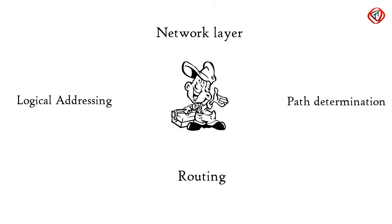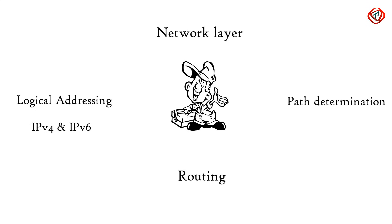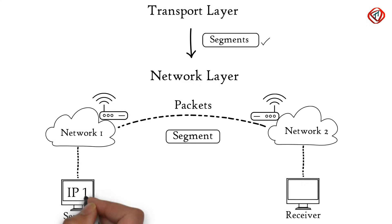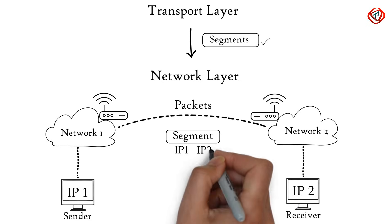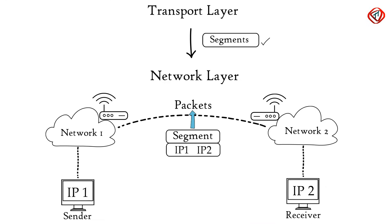The functions of the network layer are logical addressing, routing, and path determination. IP addressing done in the network layer is called logical addressing. Every computer in a network has a unique IP address. The network layer assigns the sender's and receiver's IP address to each segment to form an IP packet, ensuring that each data packet can reach the correct destination.